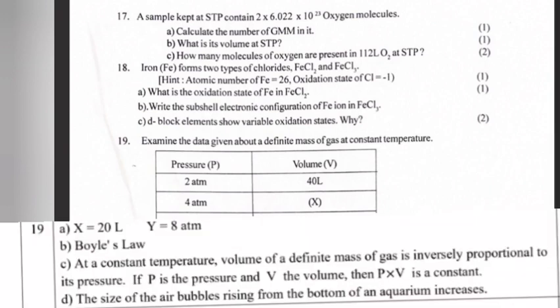Answer: A. X equals 20 liter, Y equals 8 atm. B. Boyle's Law. C. At constant temperature, volume of definite mass of gas is inversely proportional to its pressure. If P is the pressure and V is the volume, then P × V is a constant. D. The size of the air bubbles rising from the bottom of an aquarium increases.